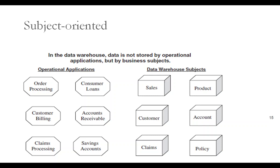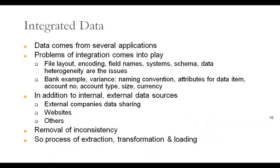So that is the thing regarding subject-oriented — subjects are the critical business things. Now, next is integrated data. When we are talking about a data warehouse, data comes from several applications. When integrating data from several applications, we have to integrate these data and there may be different problems to tackle. For example, there may be differences in file layout, encoding scheme, field names, systems, operating systems, schema of the database, and data heterogeneity. These are some of the issues.